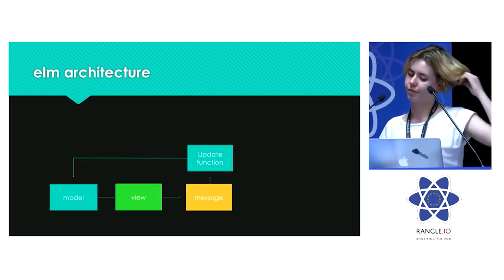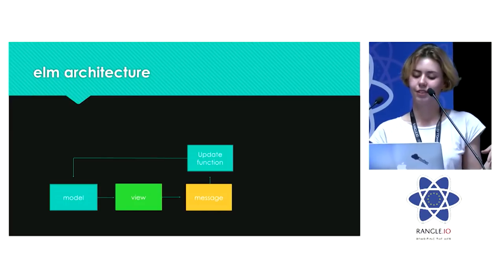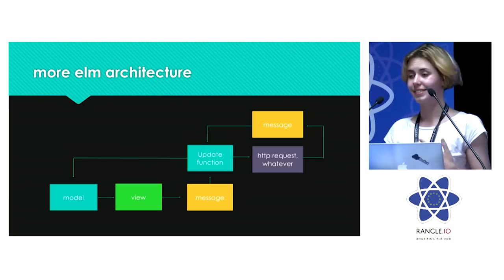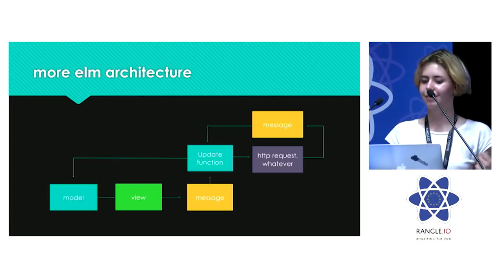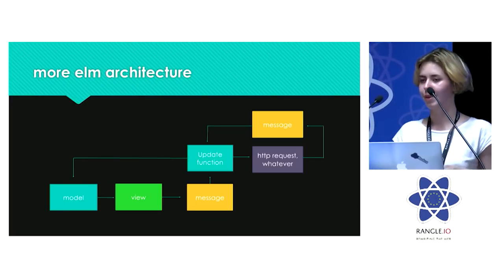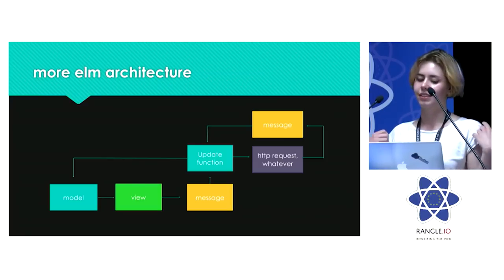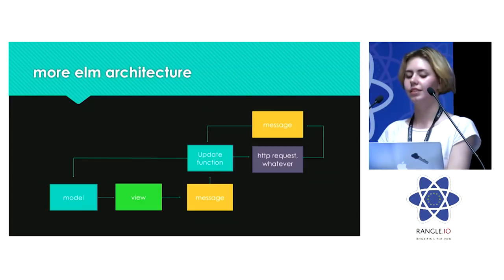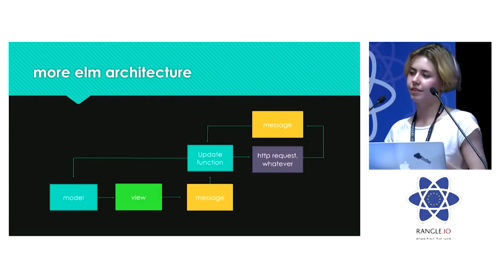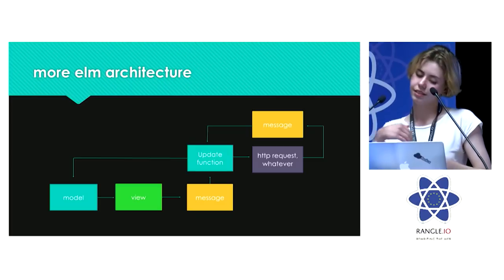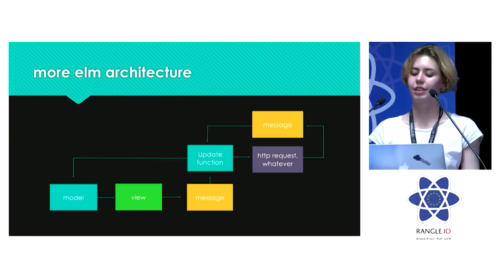What about if you have an HTTP request? No problem, because you have something called commands. It's basically what the name suggests: you send a command saying you'd like an HTTP request to be sent, and then Elm goes and does it, and then it comes back with a message that the update function can also handle, and then it produces a new model based on whatever you got back from the HTTP request.